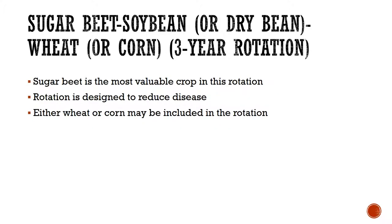A sugar beet, soybean or dry bean, and then wheat or corn rotation is a three-year rotation more common in the western United States, like Colorado, especially where sugar beets are grown. Sugar beet is going to be your cash crop, depending on the year with soybeans. This rotation is designed to reduce disease — like root rot, you're not going to see much of that with this rotation. You can also adjust whether to use wheat or corn depending on the climatic variables you have.